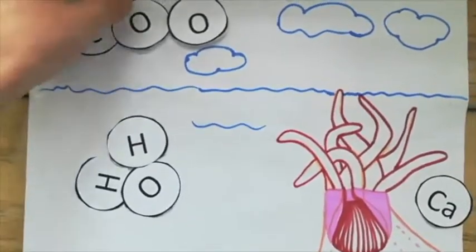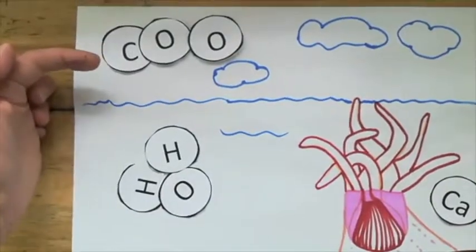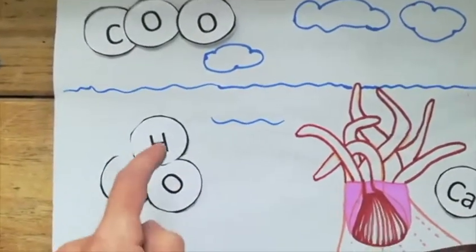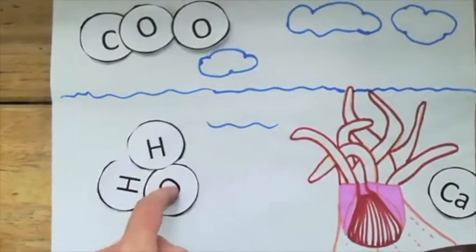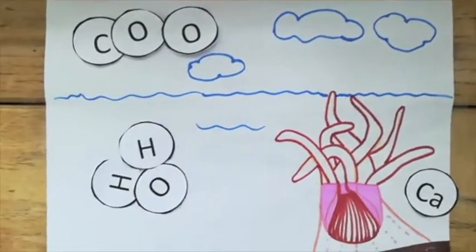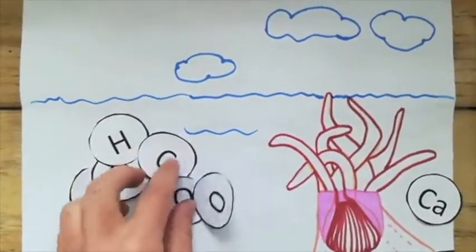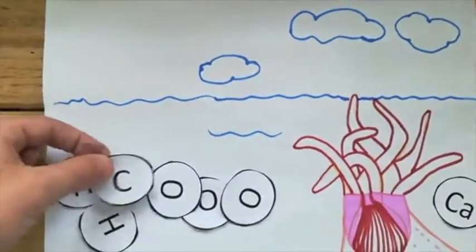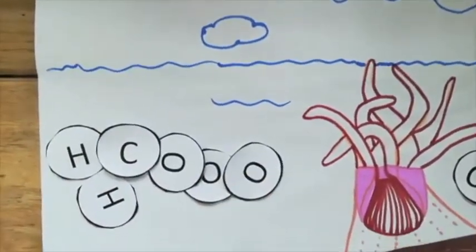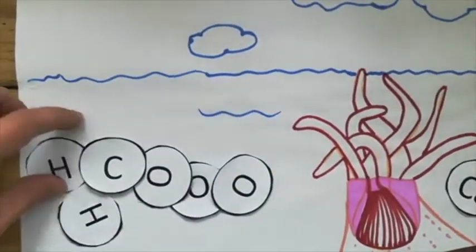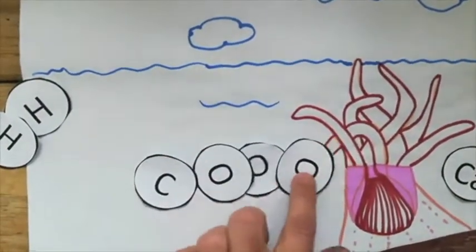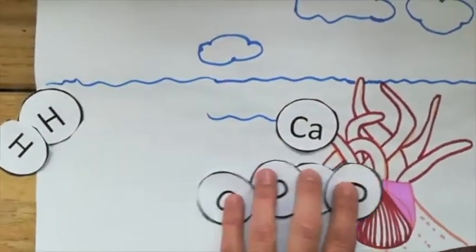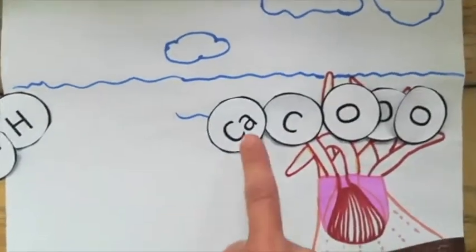Here's a polyp and this is its skeleton, and we're going to look at the chemistry behind how it makes this skeleton. One carbon particle and two oxygen particles joined together make carbon dioxide - CO2 - a gas floating in the air. Two hydrogen particles and one oxygen particle joined together make water, H2O. Carbon dioxide dissolves into the seawater and makes something called carbonic acid, which has two hydrogen particles, one carbon particle, and three oxygen particles. That very quickly breaks down - the hydrogen particles go somewhere else - and we're left with carbonate. The polyp then takes calcium, another particle floating in the seawater, and joins it to the carbonate to make calcium carbonate.